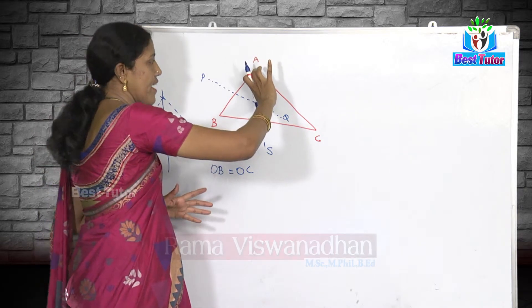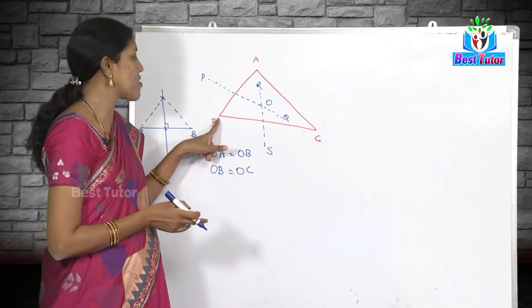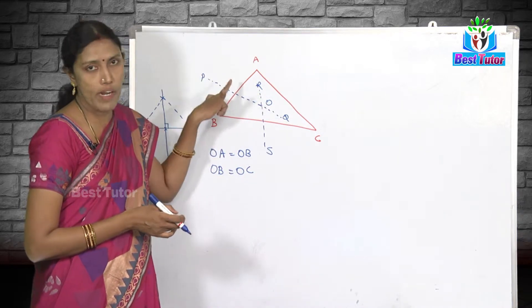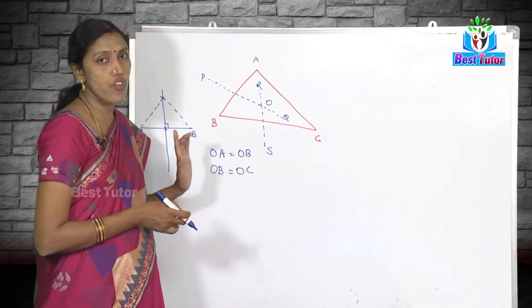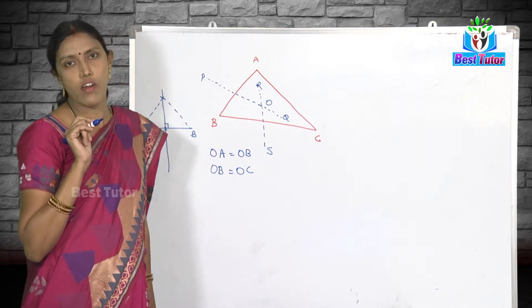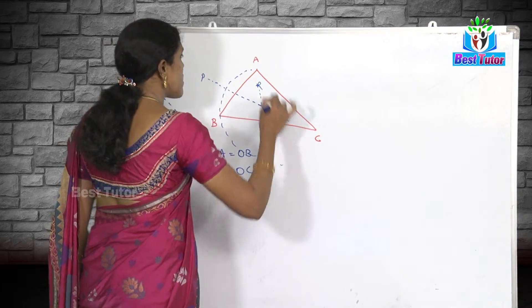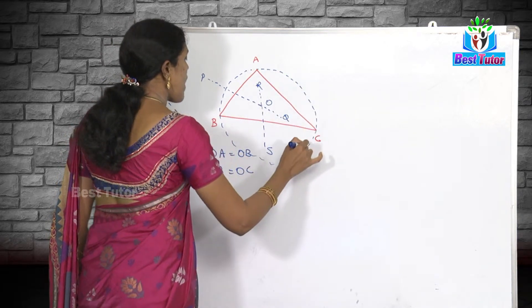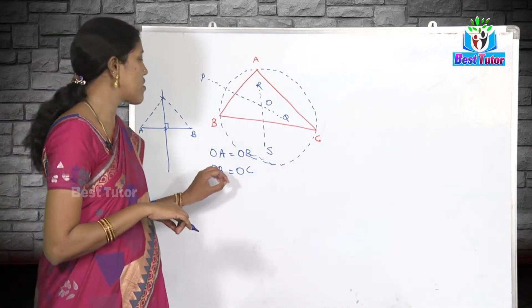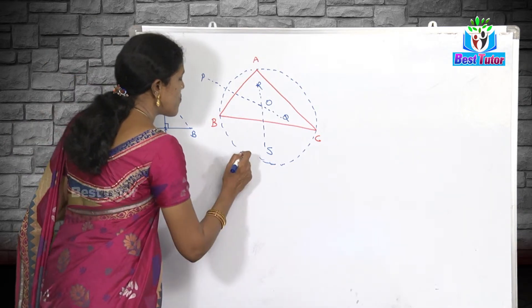So OA equals OB equals OC. If I draw a circle with OA as the radius, that circle should pass through B and C as well, because OB and OC are also equal to the radius. That is possible only when these three distances are equal, making them the radius of the circle. So only one circle is possible which passes through all three non-collinear points — one and only one circle.